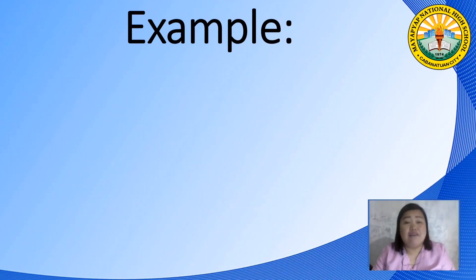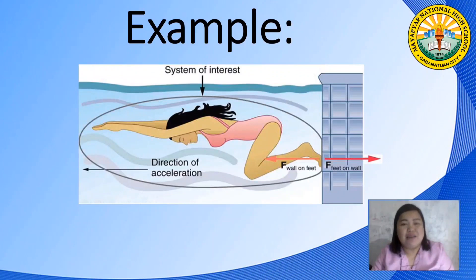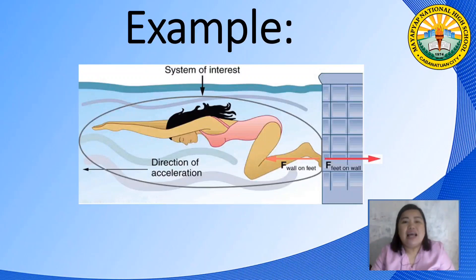Let's have more examples of Newton's third law of motion. Consider a swimmer pushing off from the side of a pool, as illustrated. The swimmer pushes against the pool wall with her feet and accelerates in the direction opposite to that of her push. The wall exerts an equal and opposite force back on the swimmer. The swimmer gives the action force while the wall gives the reaction force.